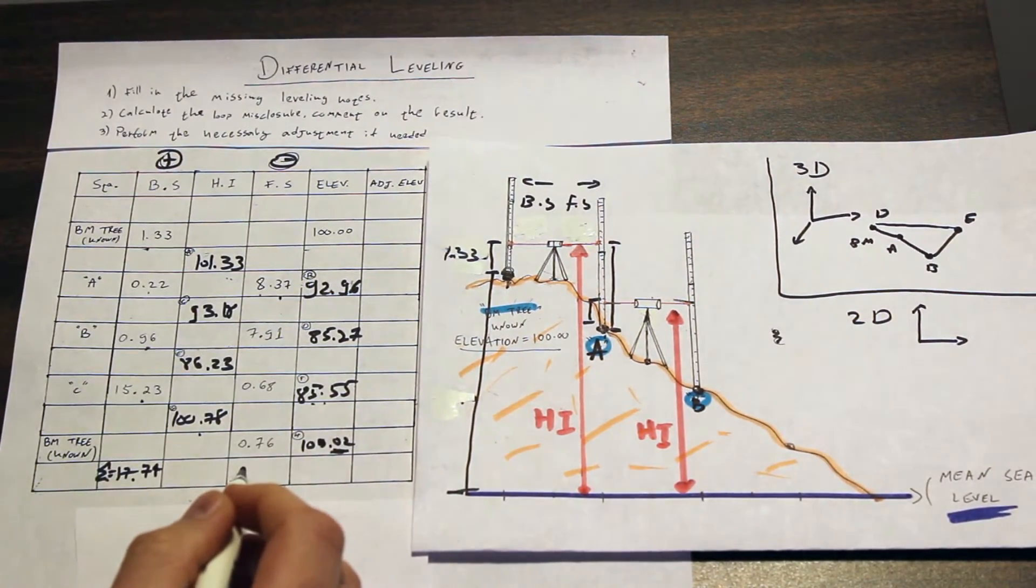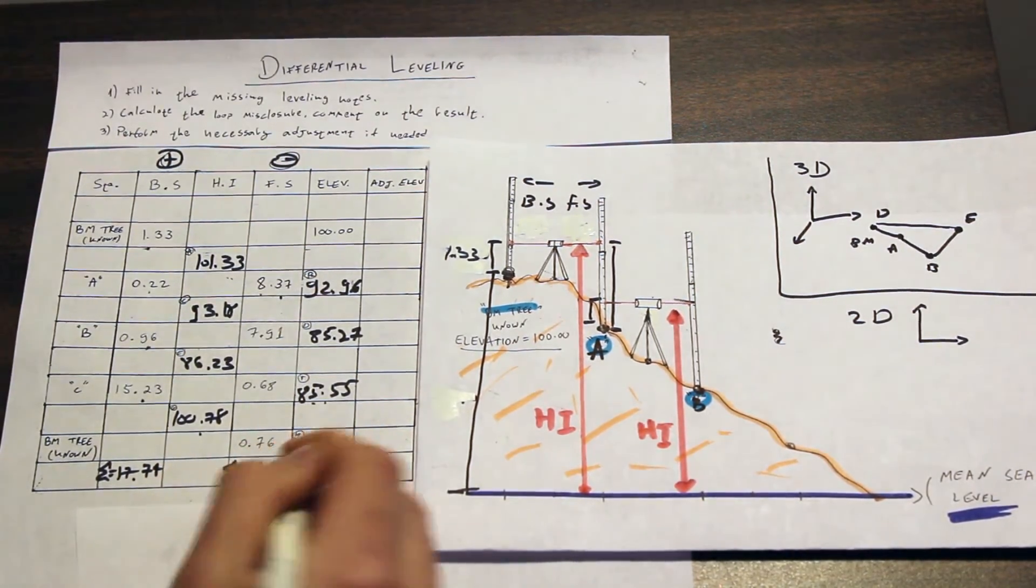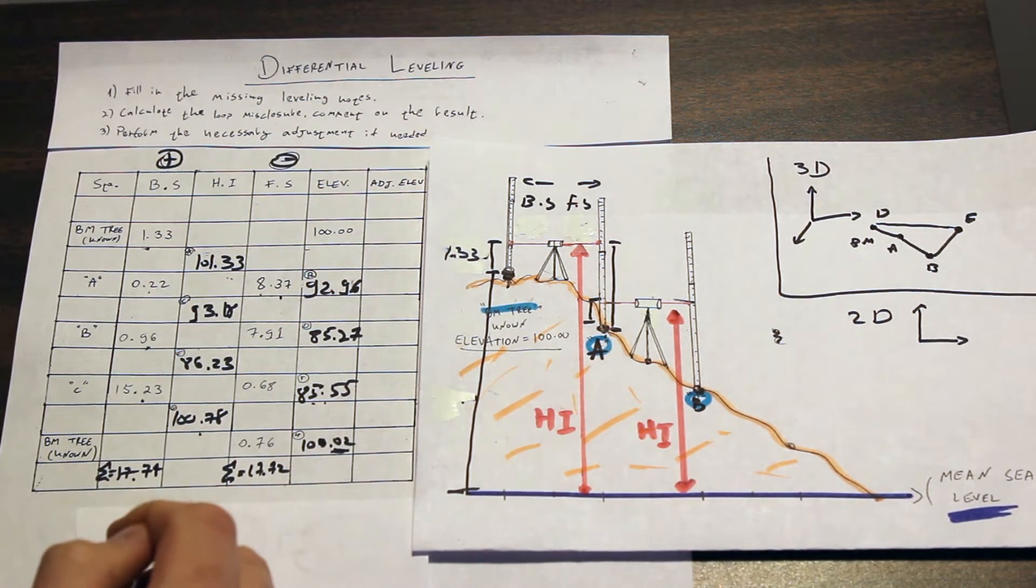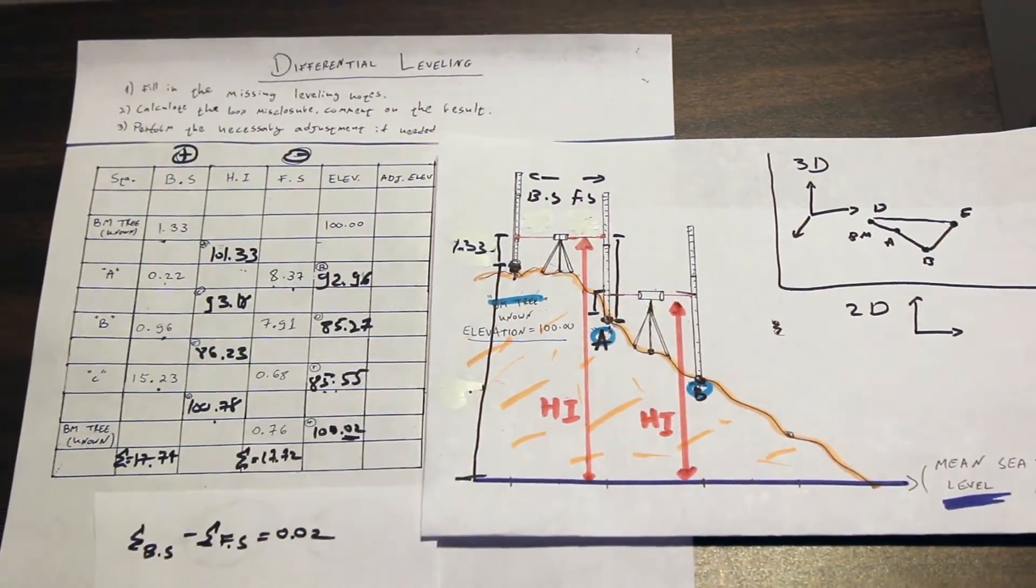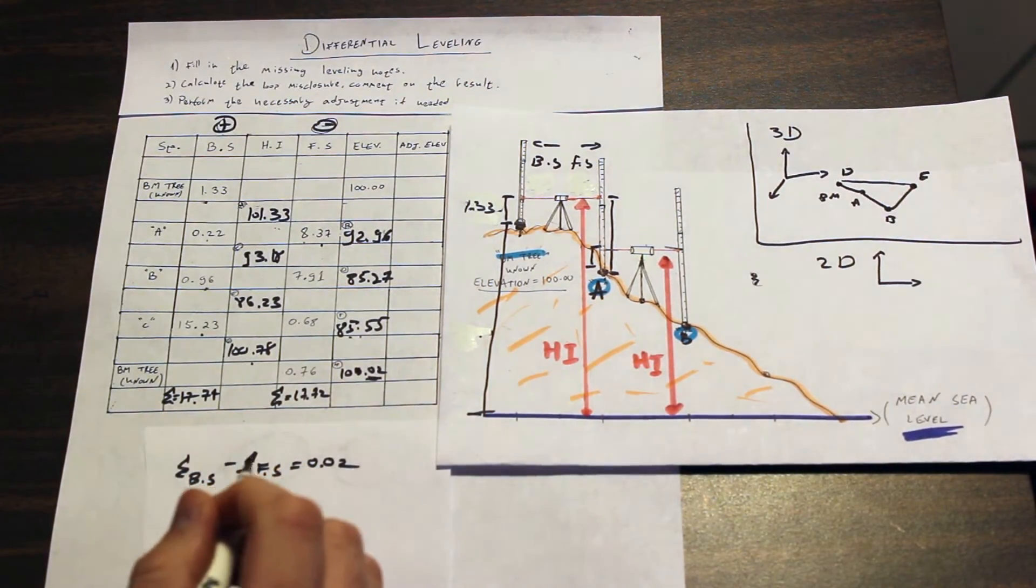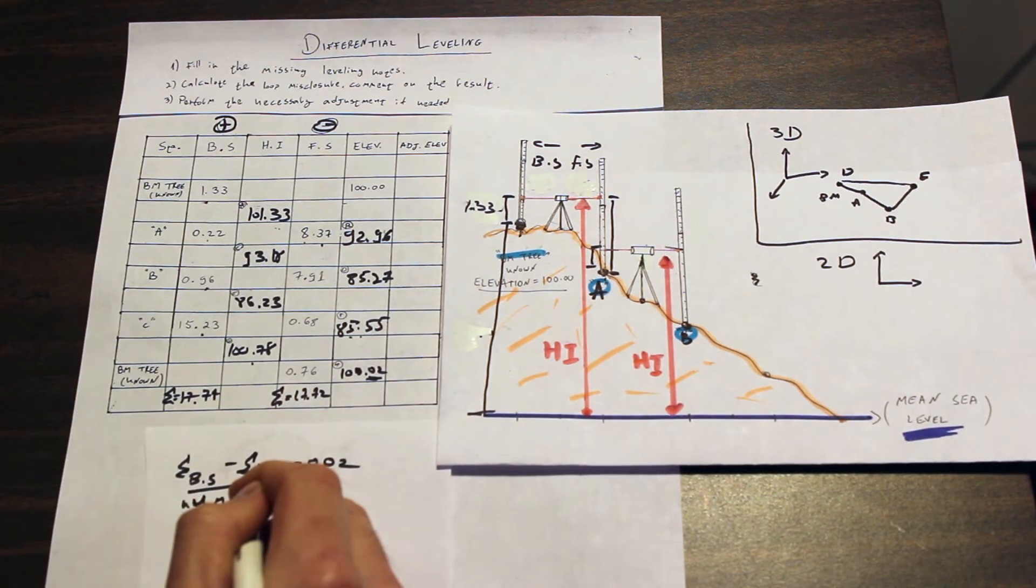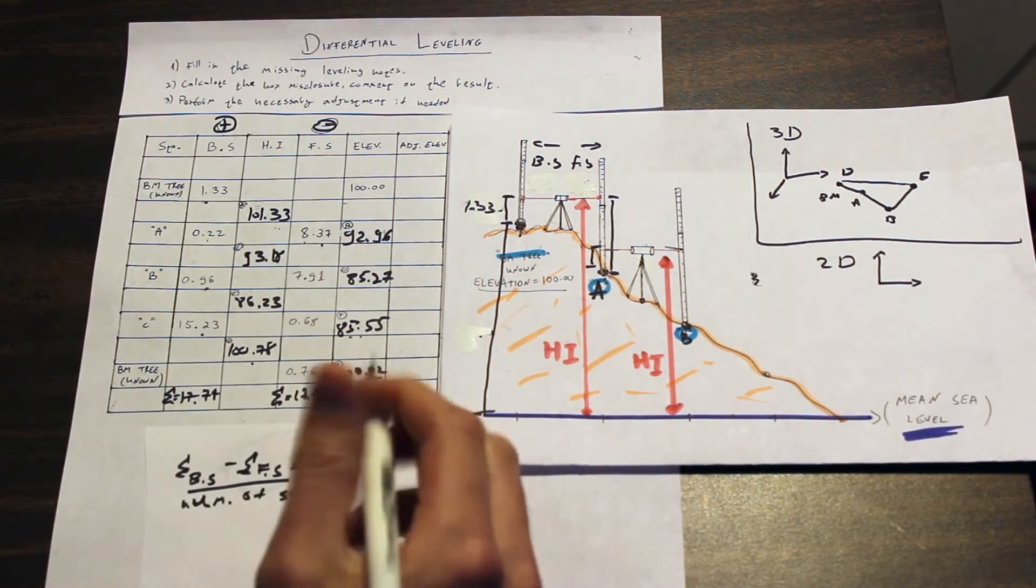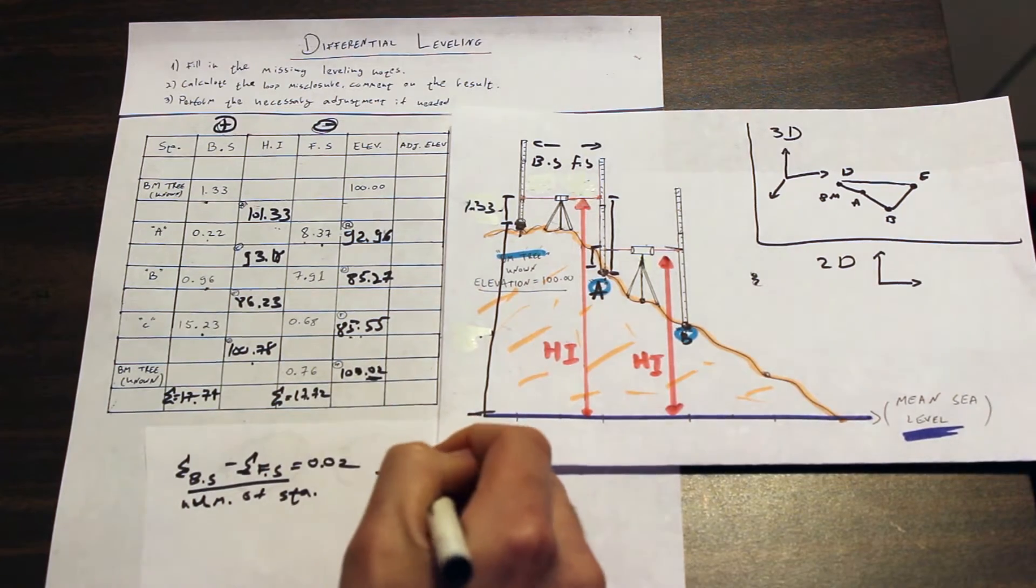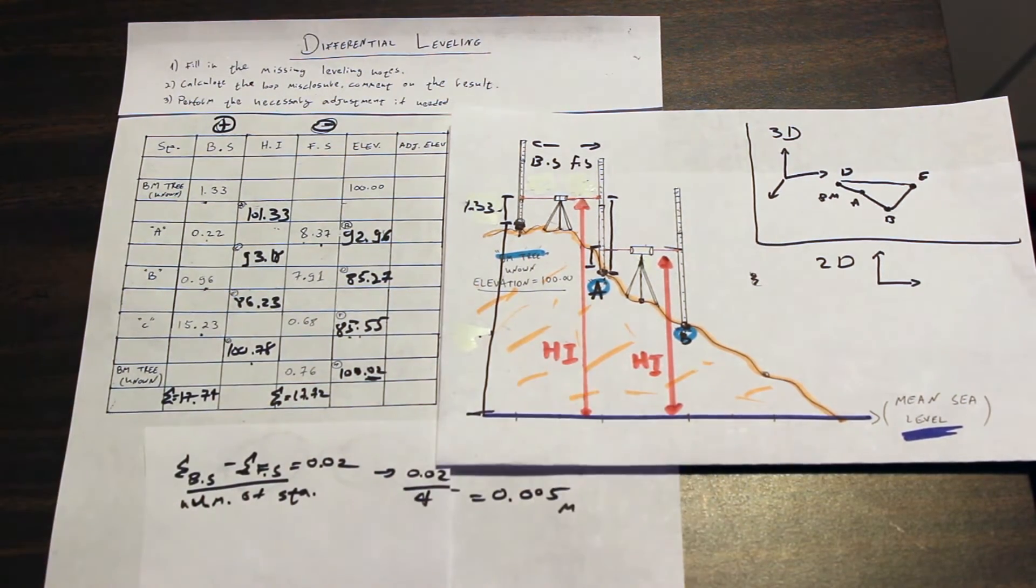Then you take the sum of the foresides, add them all up, and we would get 17.72. If we take the sum of the backside minus the sum of the foresight, we would get 0.02. Now, how do we get the loop misclosure? The loop misclosure is just the difference over the number of stations, which in this case was 4. So 0.02 over 4 would give us 0.005 meters.